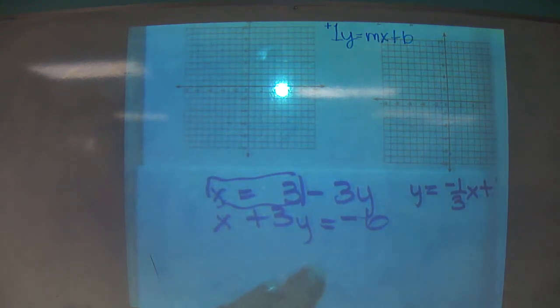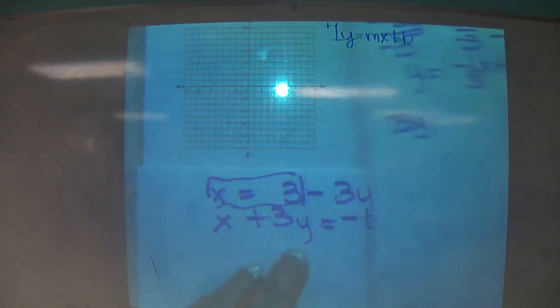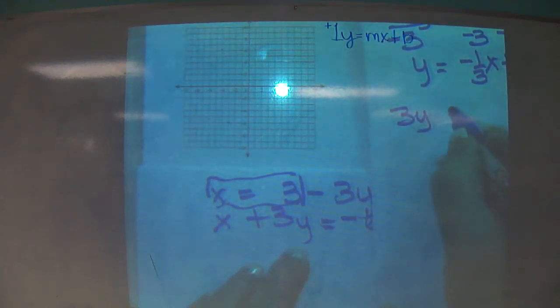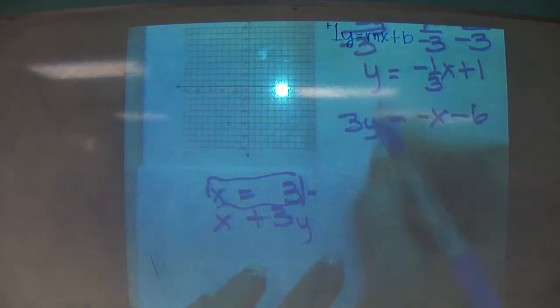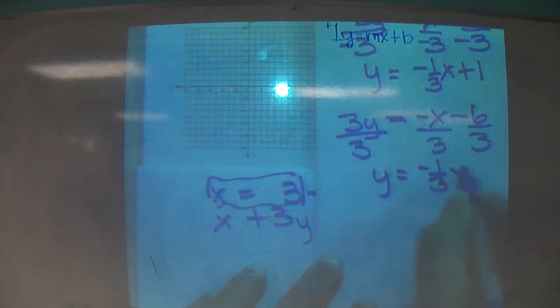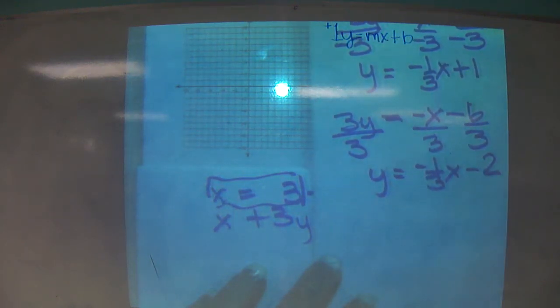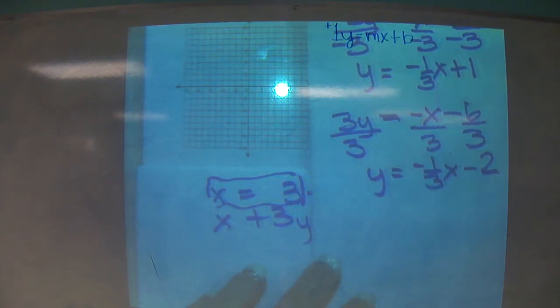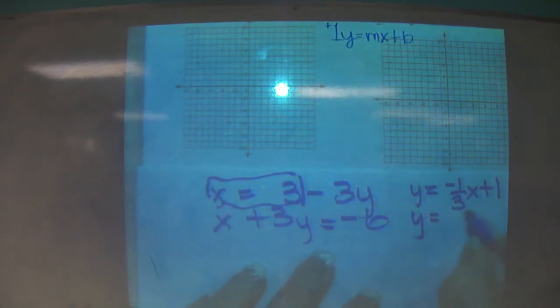Then the other one, we're going to reorganize into 3y equals negative one-third x minus 6. Everybody see where that came from? Just manipulating the equation, doing it really quickly. y equals negative one-third x minus 2.